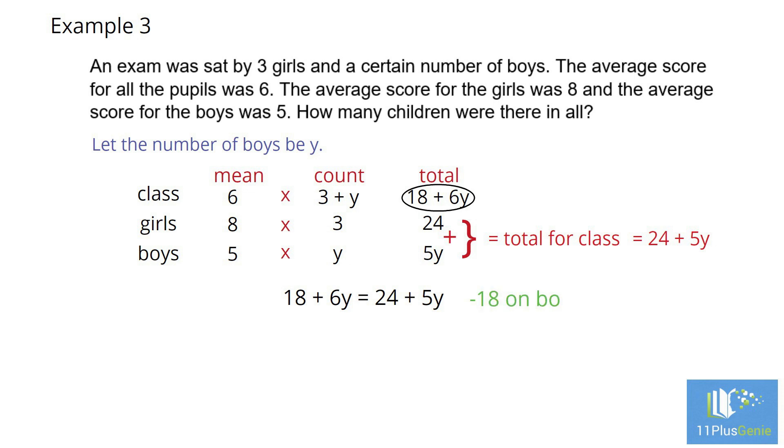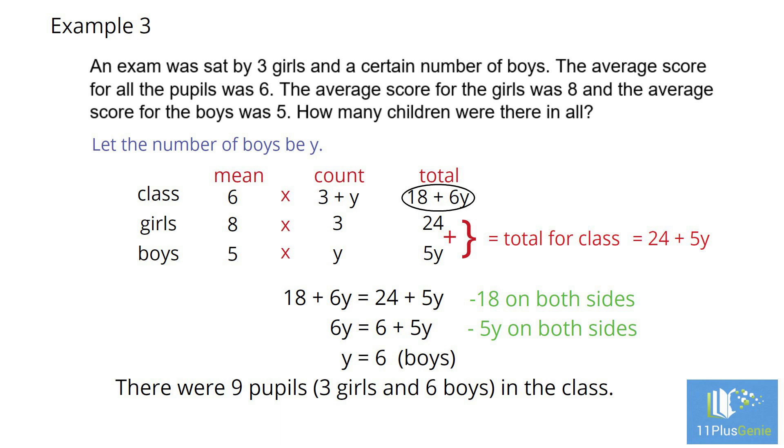Take away 18 on both sides. 6Y equals 6 plus 5Y. Take away 5Y on each side. Y equals 6. There were 3 girls and 6 boys. Total number of children is 9.